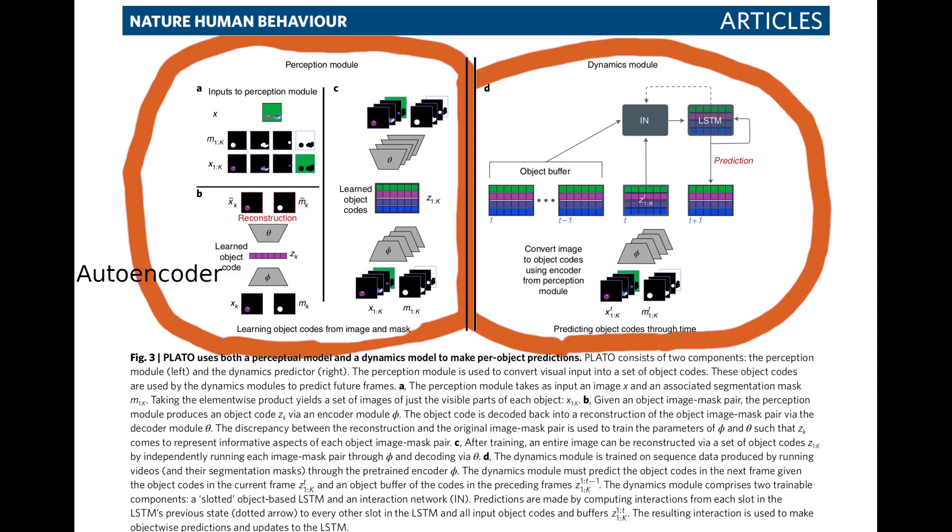Now let's have a look inside of the paper to figure out how Plato actually works. Plato consists of a perception module and a dynamics module. The perception module embeds the input video into a latent space and this latent space then contains a representation of the scene. The dynamics module then receives a buffer of the past and current representations of a state and tries to predict the next state based on that.